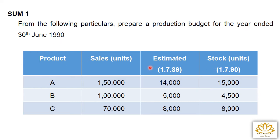There are 4 columns. The columns are: product, sales in units, estimated opening stock, and closing stock. The accounting period is 1789 to 3690. So 3690 is the closing stock period and 1790 is the opening stock period. We consider this as the closing stock for the budget period 3690.